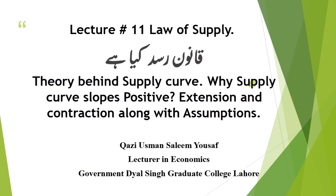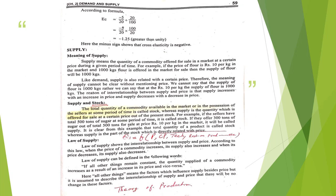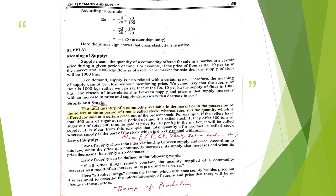Before the law of supply, remember one thing — you should know the difference between supply and stock. Stock means the total quantity available in the market, in godowns, or in storerooms — any place where the seller can put his product. Until and unless he offers his product for sale, it will not be considered as supply.